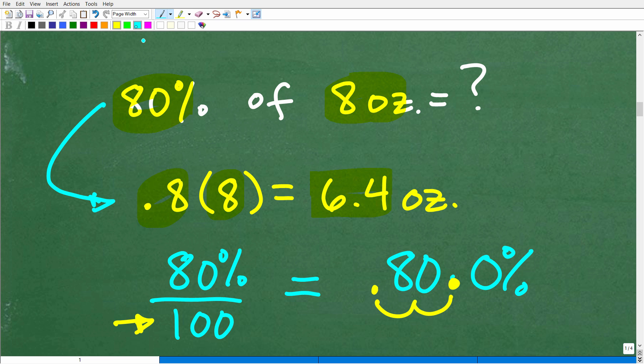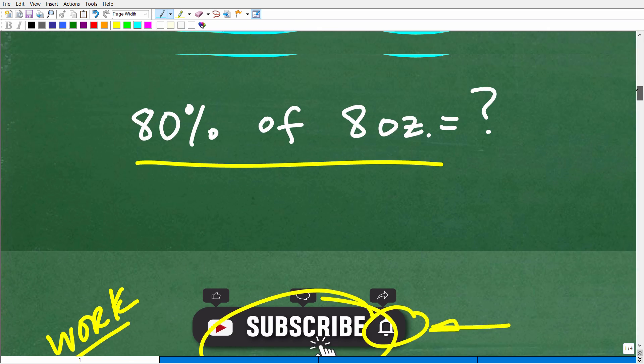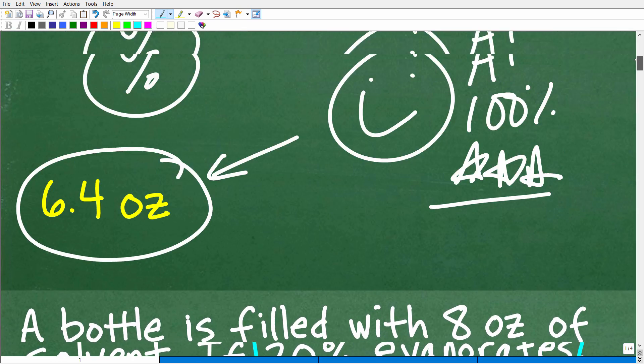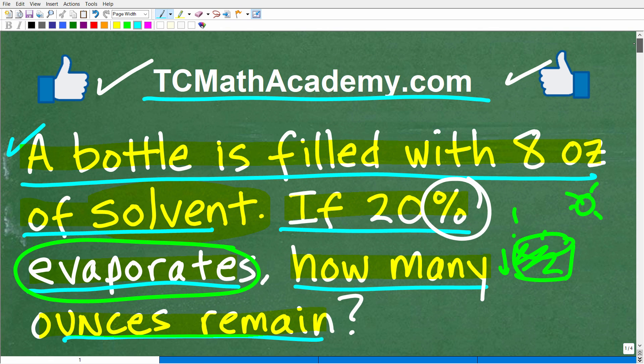Of course, the units of measure here is ounces. So six point four ounces remains. Now, if you think about this, right, 80 percent of eight ounces, if you just kind of had to take a guess, you know, six point four seems like a reasonable number. And that's another thing you should be doing with all of your answers is to kind of use some common sense and ask, hey, does this answer make sense? You know, that's always a good thing to do.